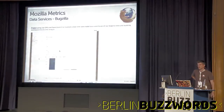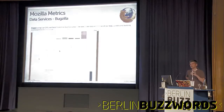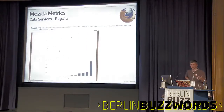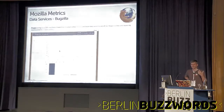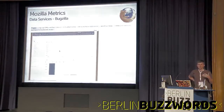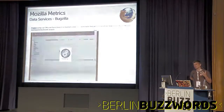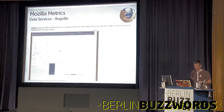We are indexing the Bugzilla data — every unique version of a bug over history — and able to perform faceted queries to see trends over time. How long does it take a bug to be closed? How many bugs does each team member have, broken down by priority or severity? Things of that nature.